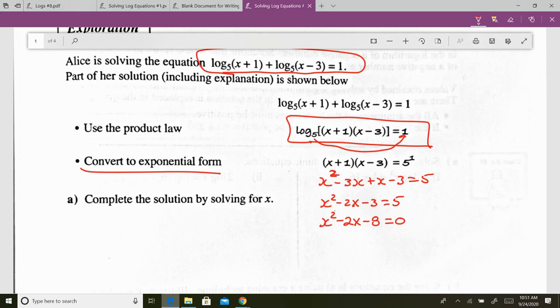So what multiplies to negative 8 and adds to negative 2? negative 4 and positive 2. So it becomes x minus 4, x plus 2.